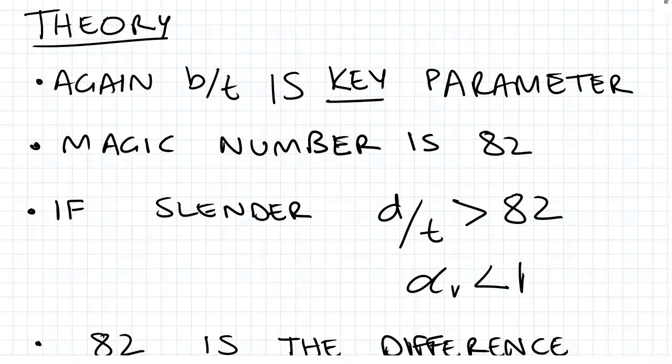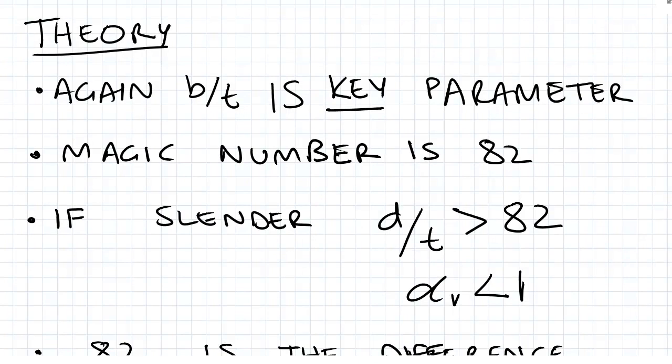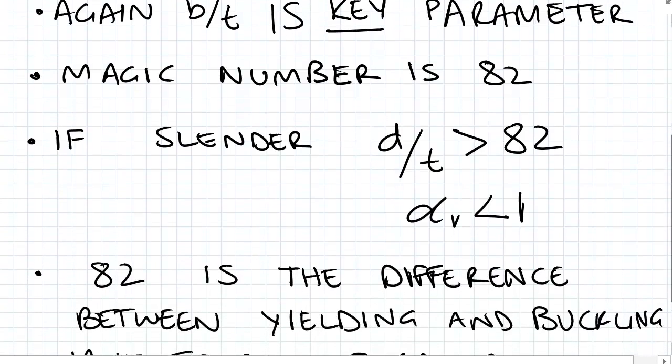And calculating the shear forces, it's important to understand the theory. The calculations are relatively simple. What I want to say is that the B on T is again the key parameter when calculating the shear forces, and the magic number is 82. If it's slender...